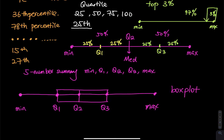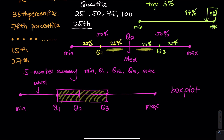The box represents the middle 50 percent of the data — that is 25 plus 25 percent. The name box plot comes from two inventors: the first person's last name is Box and the second person's last name is Whisker. The middle 50 percent is called the box, and the two arms are called whiskers. Nowadays we just call it a box plot.